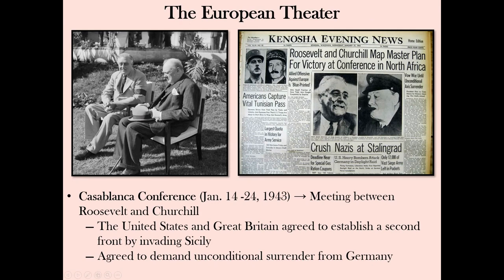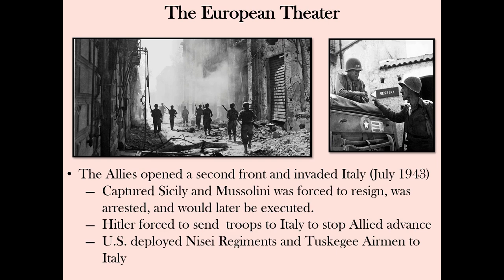Let's go back to Europe — remember these events were happening simultaneously with the Pacific. In January 1943, Roosevelt and Churchill met at Casablanca, Morocco, agreeing on an invasion of Sicily. Churchill hoped this would knock Italy out of the war and force Hitler to commit troops there. The two also agreed the war would only end with Germany's unconditional surrender. American and British forces landed in Sicily on July 9, 1943, and in just over five weeks conquered the island. Mussolini was forced to flee when his government collapsed. By June 1944, the Allies had captured Rome. The campaign in Italy highlighted the diverse fighting force with Nisei regiments and Tuskegee Airmen helping secure victory over the Axis.